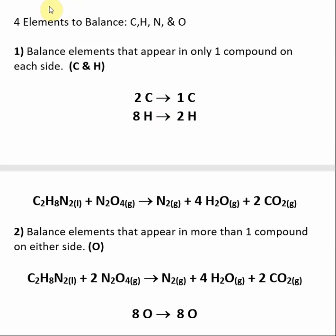We are going to balance carbon and hydrogen first. When looking at carbon, we have two carbons on the left and one carbon on the right, so we balance this by putting a stoichiometric 2 in front of carbon dioxide. With hydrogens, we have eight hydrogens on the left and two on the right, so we balance the hydrogens by putting a stoichiometric 4 in front of water.